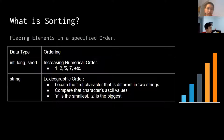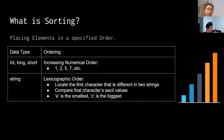You can sort them by how big they are as numbers — so 1, 2, 5, 7, et cetera. For strings, you can put them in lexicographic order. You locate the first character that is different in two strings, and then compare them with the ASCII values of the characters. 'A' is the smallest and capital 'Z' is the biggest.